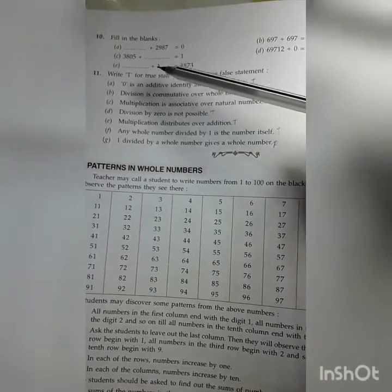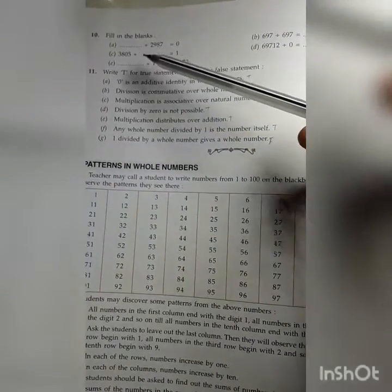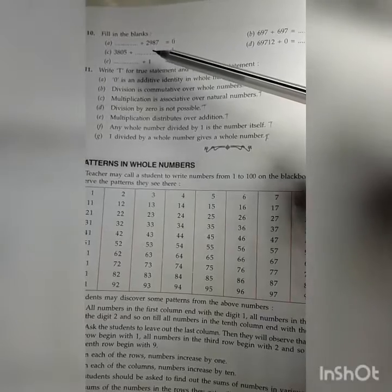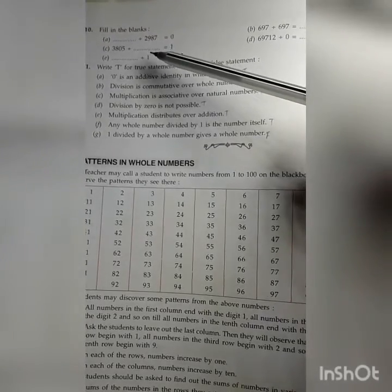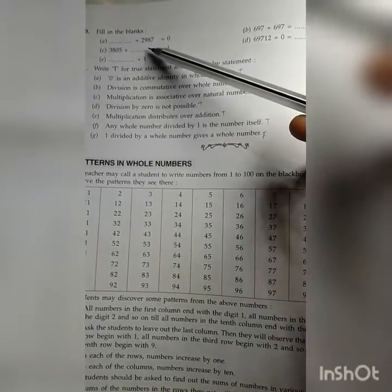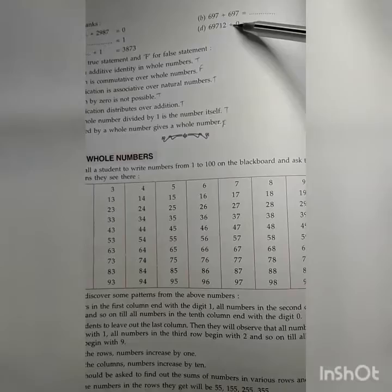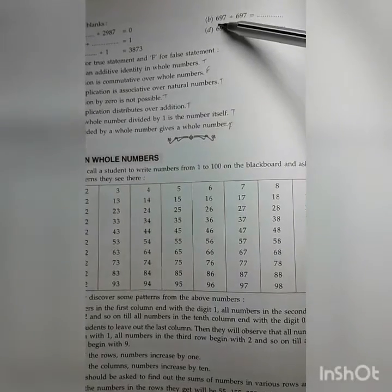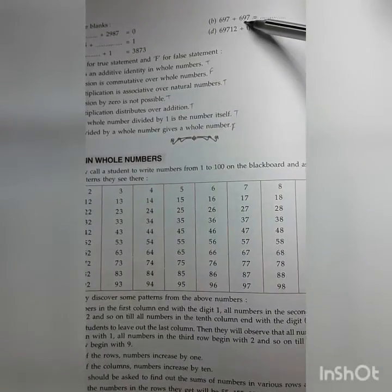Then number 10, children you see. Fill in the blanks. A: 2987 divided by 0. Your answer is 0. 0 divided by any number equals 0.